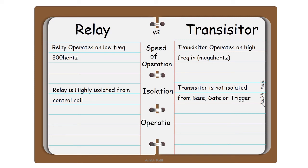Operation. Relay can only on and off. Transistor can amplify analog signals as well as function as a switch.